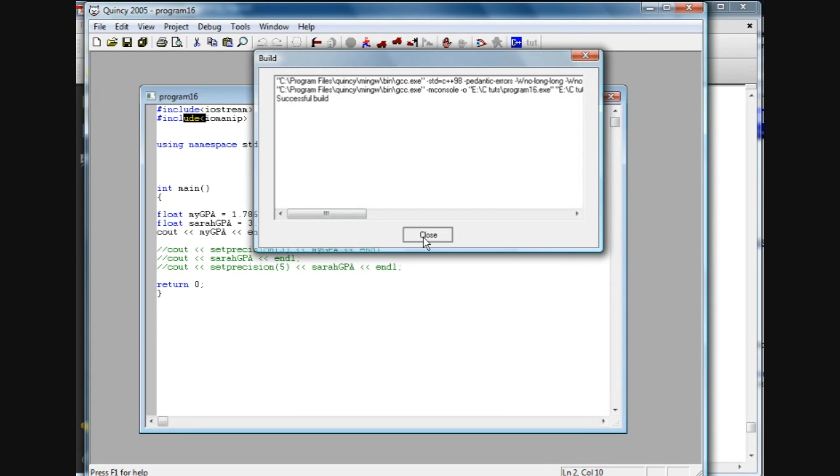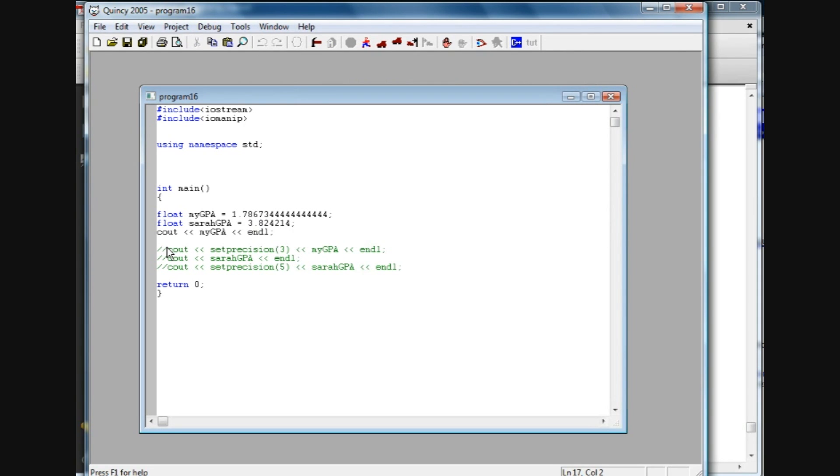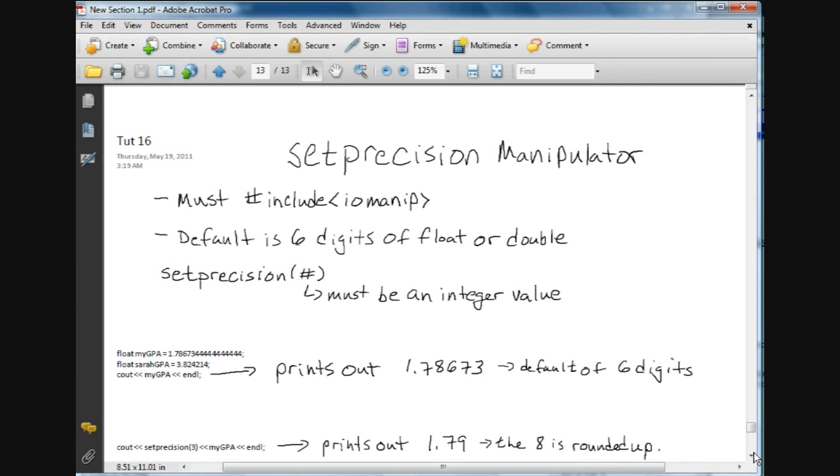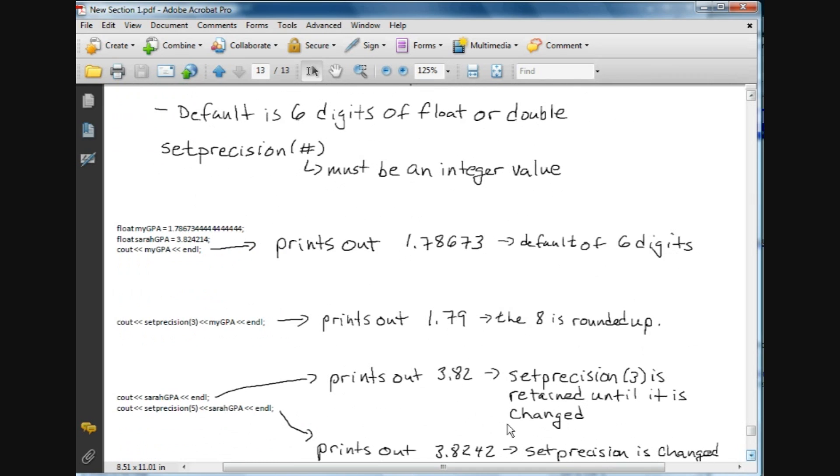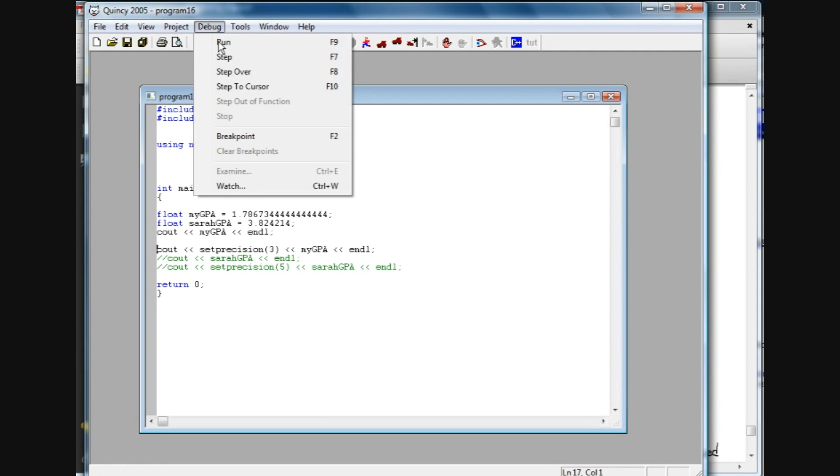Now we can manipulate that using the setprecision manipulator. That's basically what I've done here. I just type setprecision and in the parentheses put three with myGPA to follow. The variable myGPA, so what that is going to do is print out 1.79. Basically it's going to round this up because this is a six, so this eight is going to get rounded up to a nine, and we have one, two, three digits as we had in our setprecision in the parentheses there. So now if I run this program...